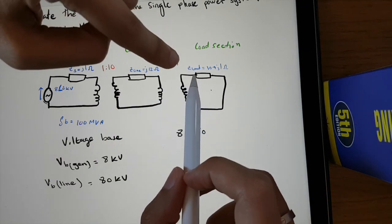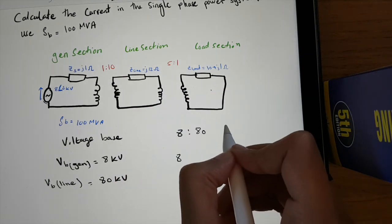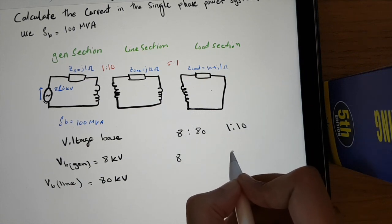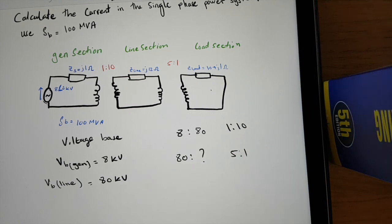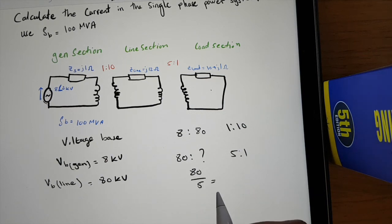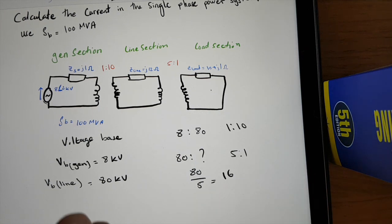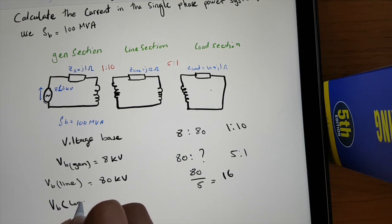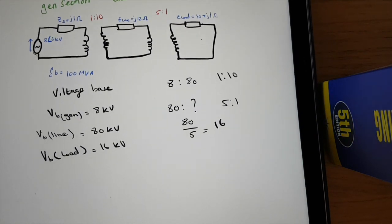For the load section, we have 80 kV on the line side. The step-down transformer has a ratio of 5 to 1, so we do 80 divided by 5, which gives us 16 kV. So V_base for the load section is 16 kV.